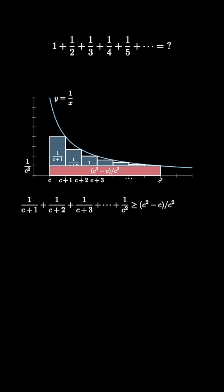So the sum of 1 over c plus 1 up to 1 over c squared is greater than or equal to c squared minus c divided by c squared, which is 1 minus 1 over c.